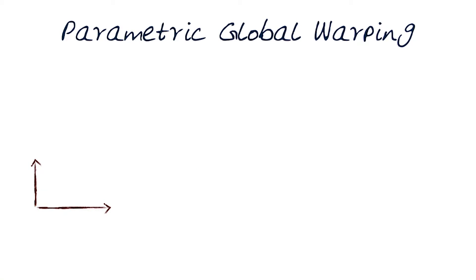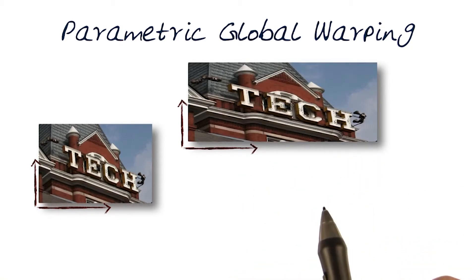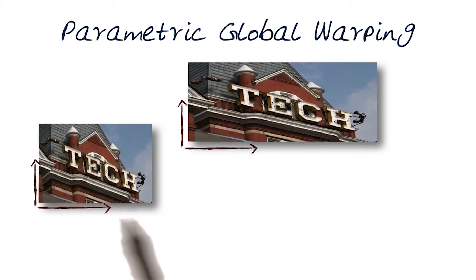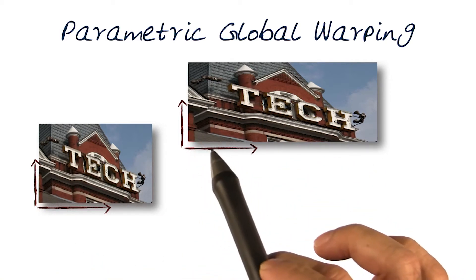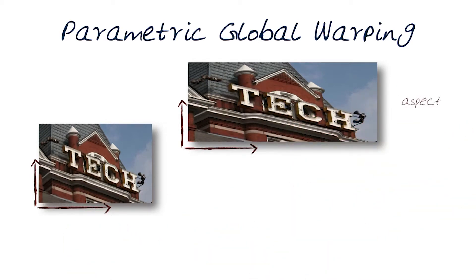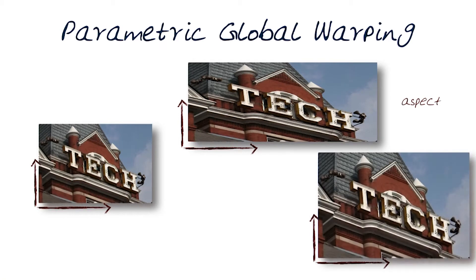Let's look at a few additional examples of parametric warping or transformation of images. In this one, the image has been stretched — essentially scaled. I've added additional dimension in the x-axis, while y remains the same, so the width is larger and the height stays the same. This, where we just change one scale parameter, is a change of the aspect of the image. We could also do this in both x and y directions, which would be a change in the scale of the image.